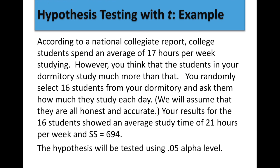Here's another example: according to a national collegiate report, college students spend an average of 17 hours per week studying. You think students in your dorm study much more than that. You randomly select 16 students and ask how much time they study. Results showed an average study time of 21 hours per week with a sum of squares of 694. You'd test this at alpha 0.05. Degrees of freedom would be 15 because you asked 16 students. Since you're looking for studying more — a directional word — it would be a one-tailed test. Find your T crit, run your analysis, then see if you can reject or fail to reject the hypothesis.